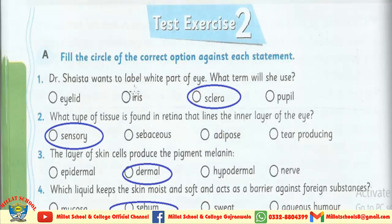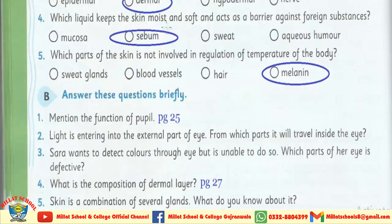MCQs: Dr. Shaistha wants to label the white part of the eye — what term will she use? Sclera. What type of tissue is found in the retina that lines the inner layer of the eye? Sensory. The layer of skin cells that produce the pigment melanin — Dermal. Which liquid keeps the skin moist and soft and acts as a barrier against foreign substances? Sebum. Which part of the skin is not involved in regulation of temperature of the body? Melanin.